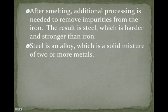After smelting, additional processes remove impurities from the iron. The result is steel, which is harder and stronger than iron. Steel is an alloy, which is a solid mixture of two or more metals.